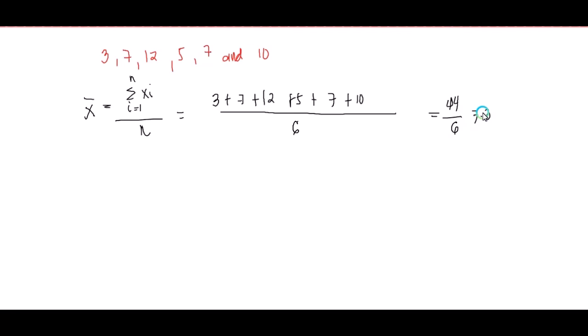Next, we have the median. The median of a set of measurements arranged in increasing order of magnitude is the middle value when the number of observations is odd, or the mean of the two middle values when the number of observations is even. If it is an even number, you add the two middle values and divide by 2.